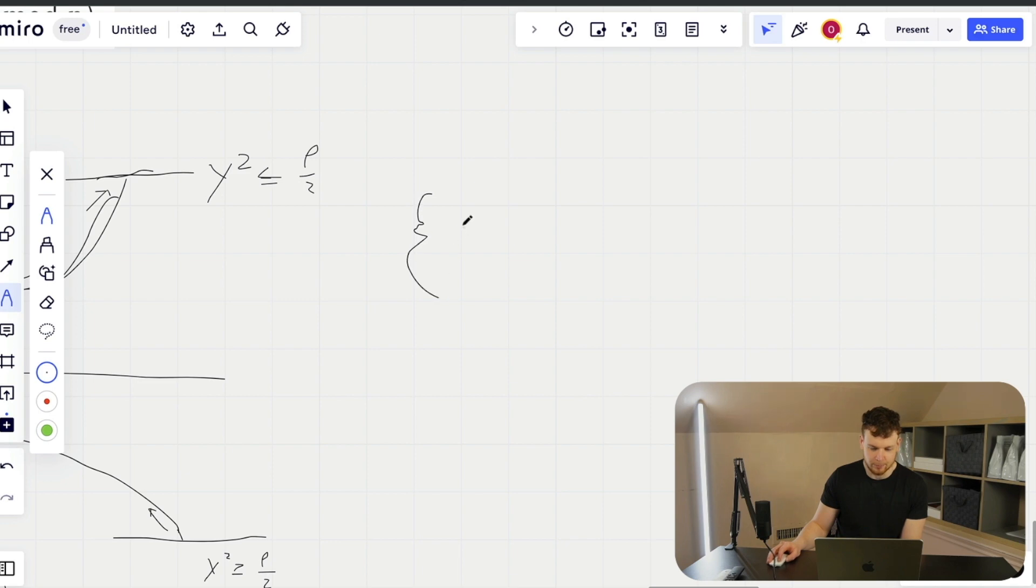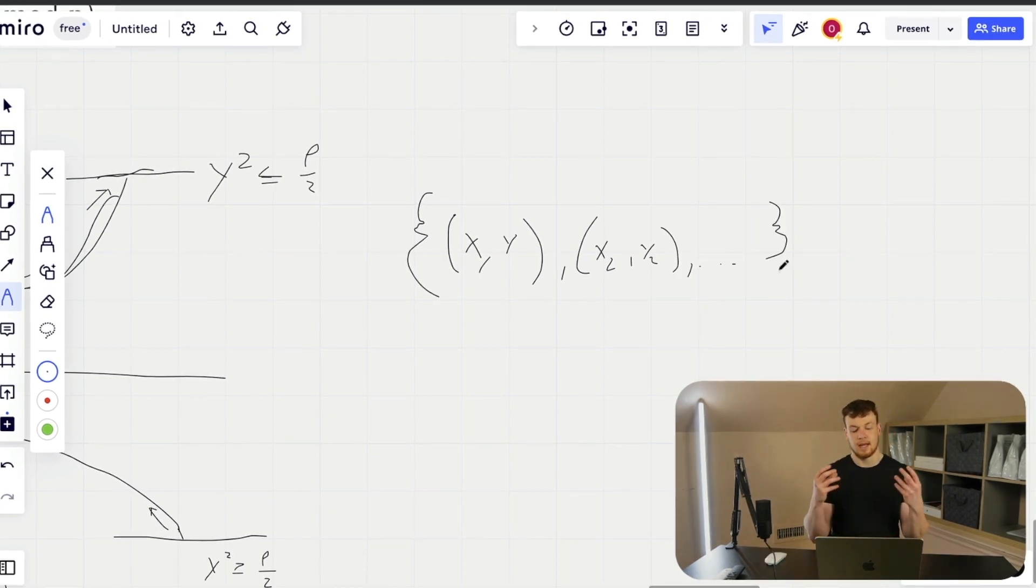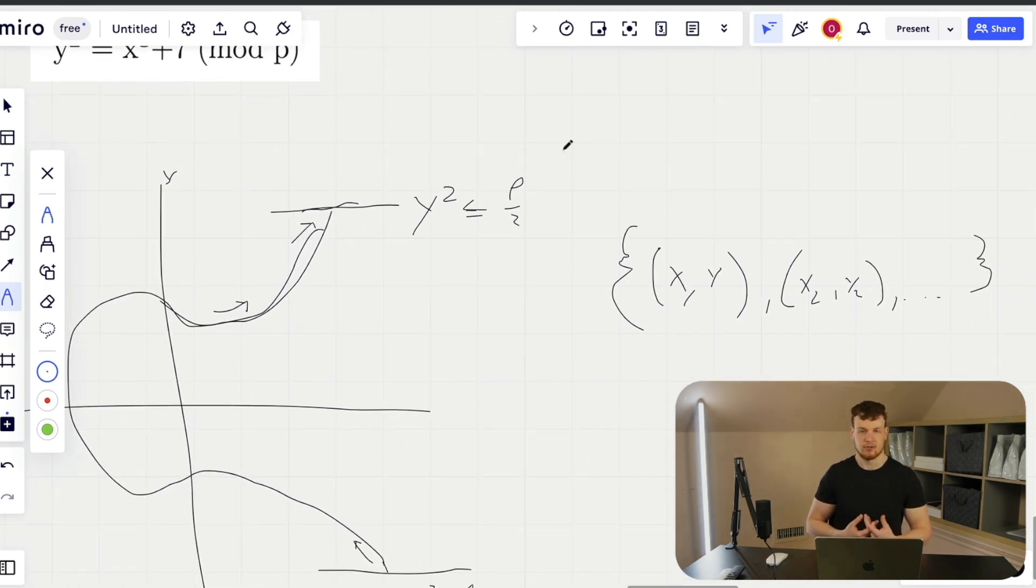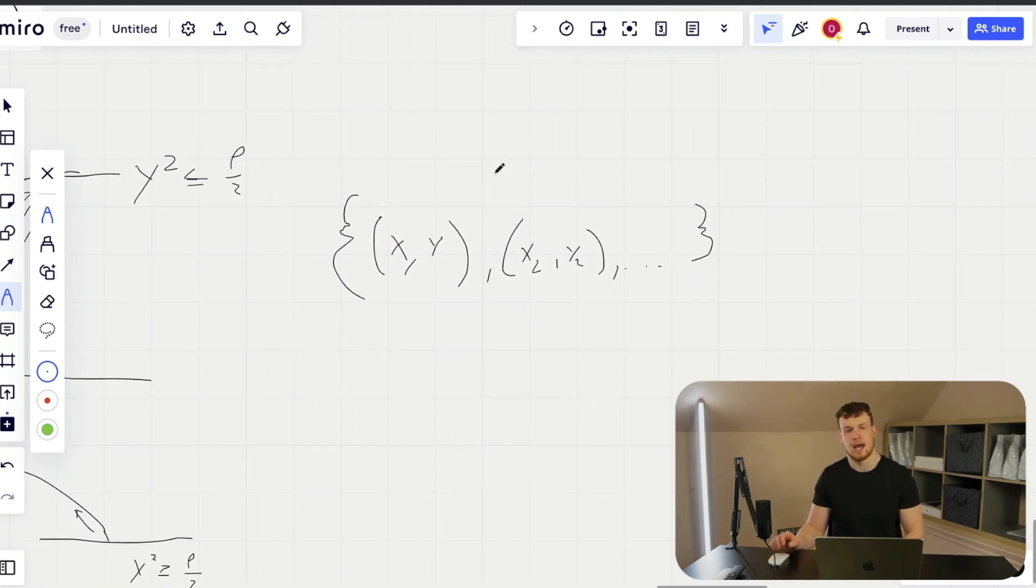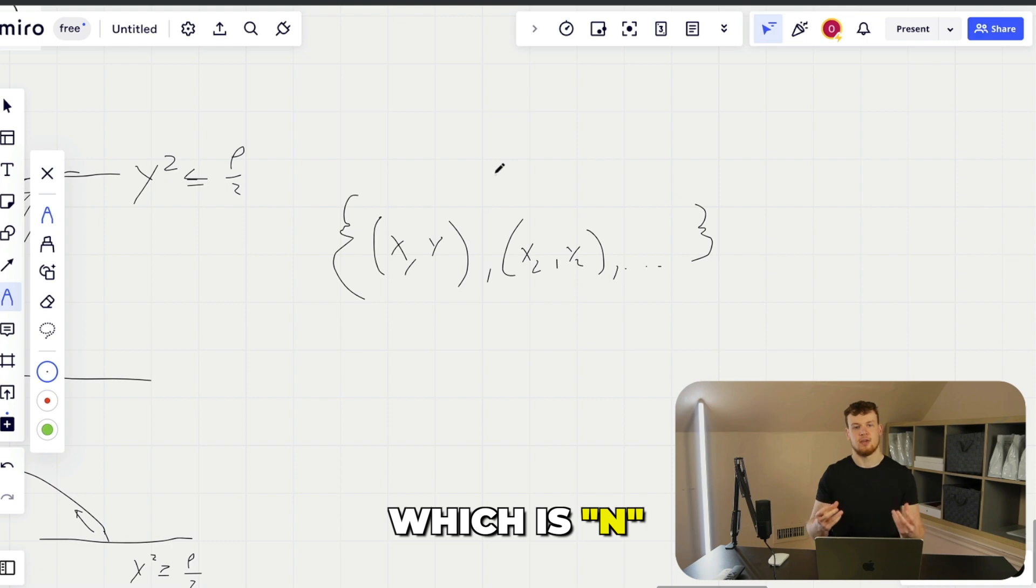So what you could really think secp256k1 as is a set of points, and these are going to be simply just x,y points that lie on said elliptic curve. And the actual coordinates for each of these points are going to be very, very large numbers as they're eventually modded by a prime number that is extremely large.